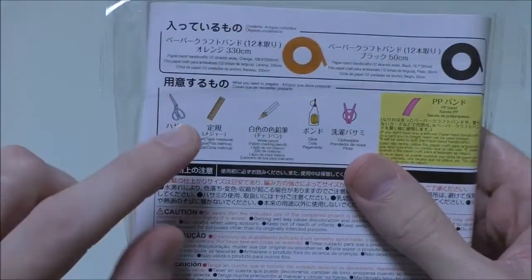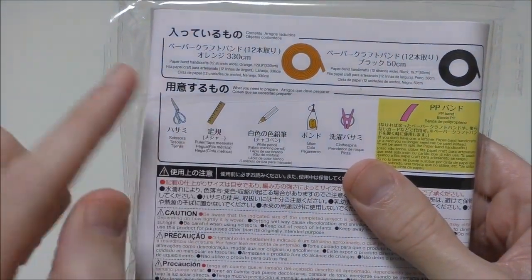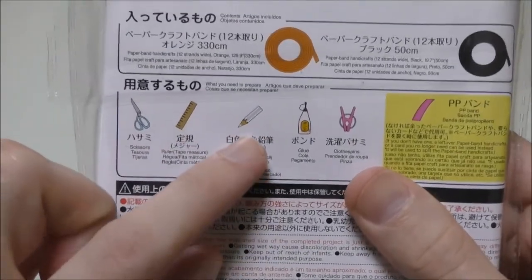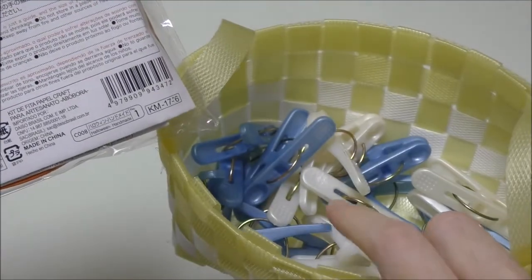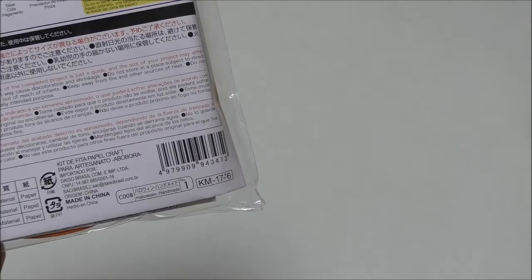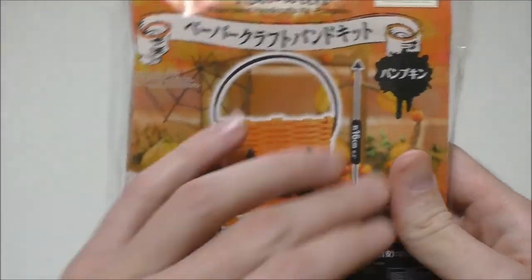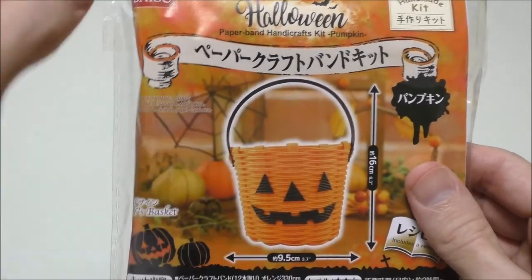Now to do this we are going to need some scissors, a ruler which I assume means tape measure as it has in the past, chalk, pencil, glue, and some pegs. I have the pegs in the basket that I wove in one of the previous videos of this type. I'll put a link down below.